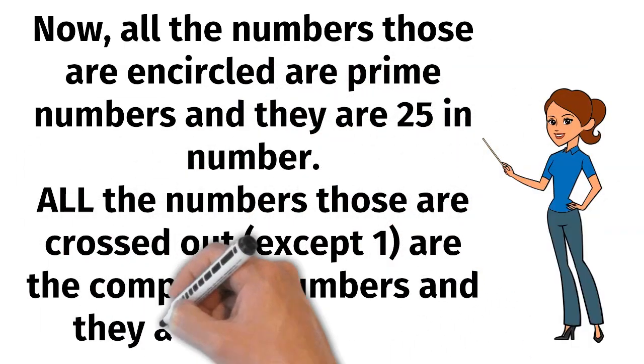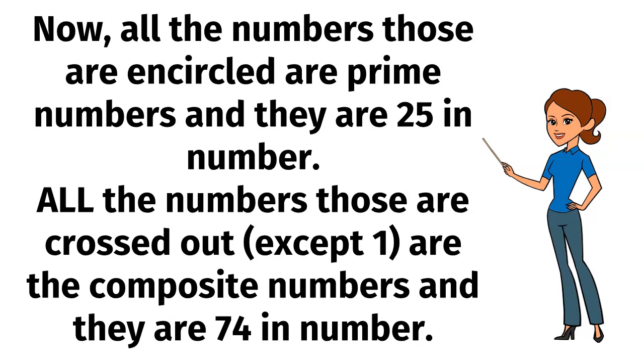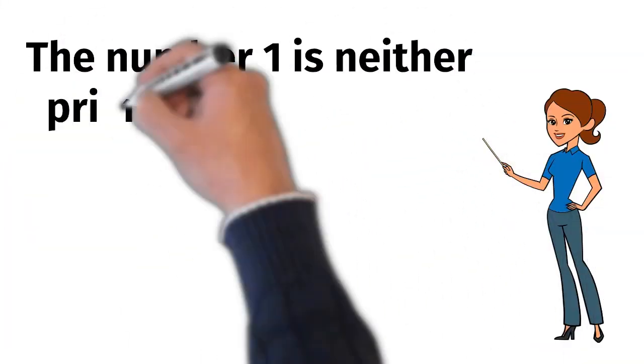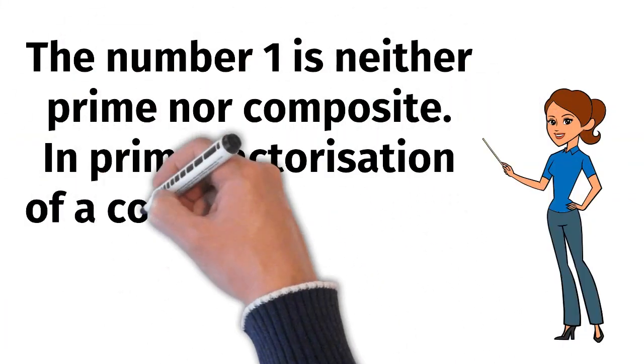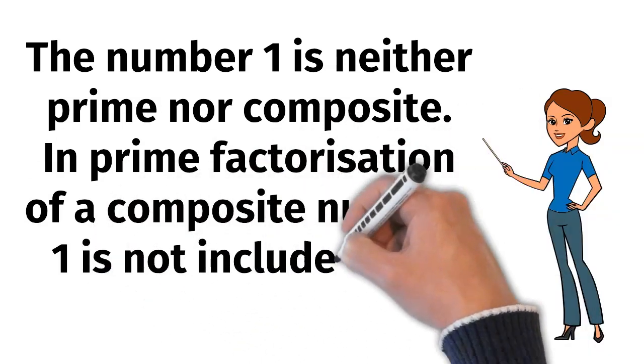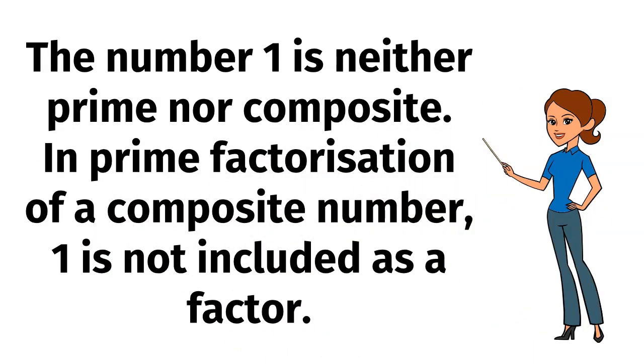All the numbers those are crossed out except 1 are the composite numbers and they are 74 in number. The number 1 is neither prime nor composite. In prime factorization of a composite number, 1 is not included as a factor.